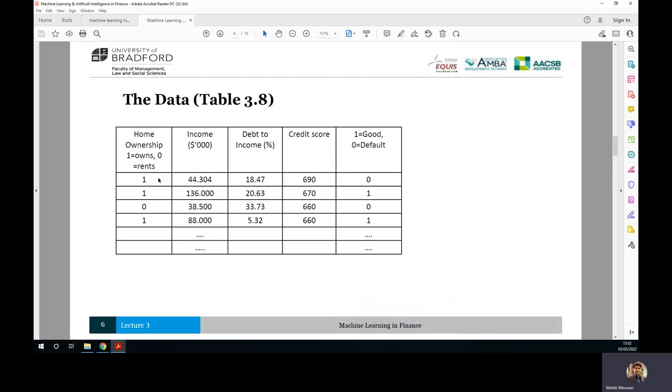Okay, so this is the data that we have got. We have got the information about individuals, if they are homeowner or not. If they are homeowner, so it's 1, otherwise 0, their income level, their debt to income ratio, credit score, and if they have been default or they didn't default, in other words, paid. So as you see here, good loan means 1, 0 means bad.